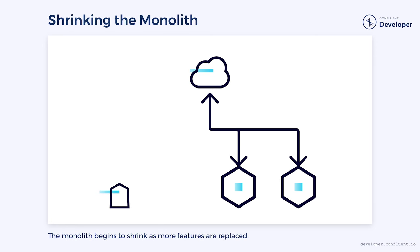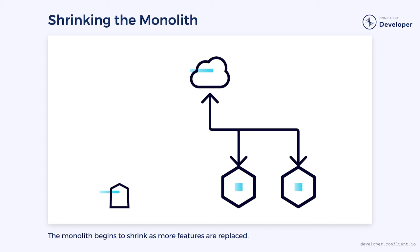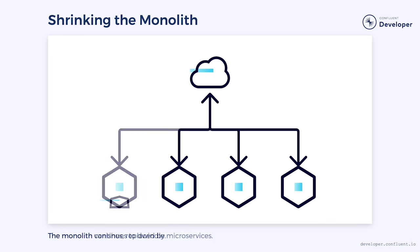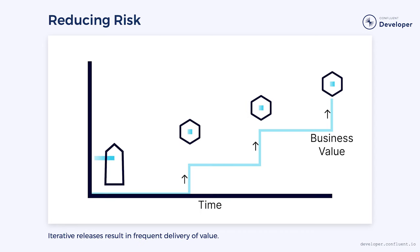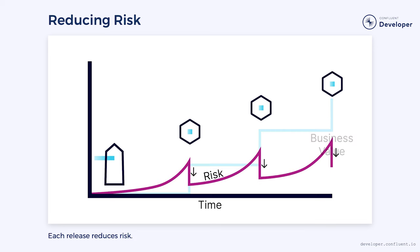As each feature is replaced by the new system, the old system begins to shrink. The traffic to the system is removed and portions of it can be turned off or deleted. Slowly, the monolith dwindles until it becomes just a fragment of its former self. In a perfect world, you would eventually shrink the monolith completely and be able to shut it down. By replacing the functionality in smaller chunks, we're able to iteratively release new business value. This shortens our delivery time and reduces risks.